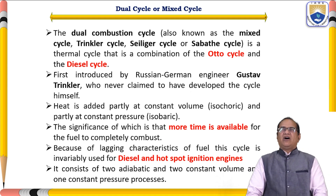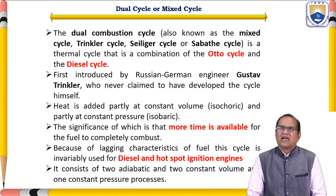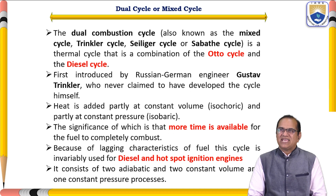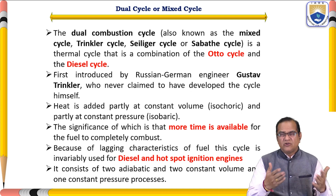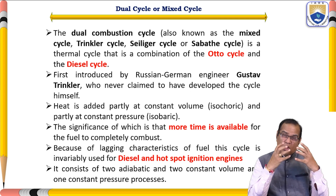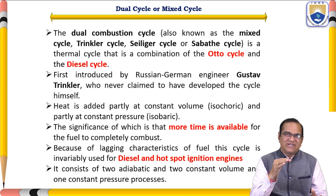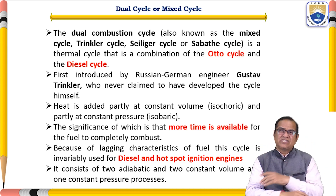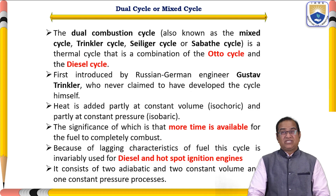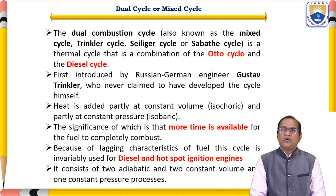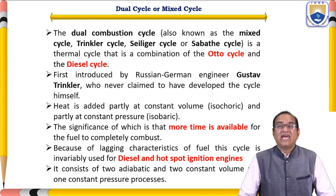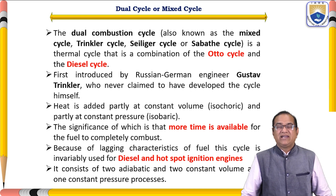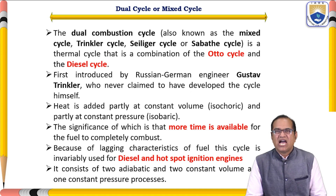The dual combustion cycle, also known as the mixed cycle, Trinkler cycle, Sabathe cycle, or slinger cycle, is a thermal cycle that is a combination of the Otto cycle and the diesel cycle. It was first introduced by the Russian-German engineer Gusto Trinkler, who never claimed to have developed the cycle himself. Heat is added partly at constant volume — called the isochoric process — and partly at constant pressure — called the isobaric process.